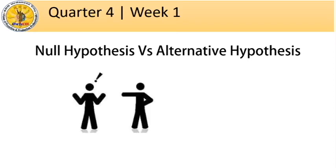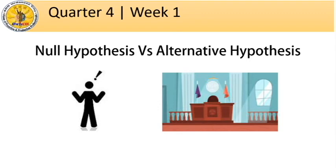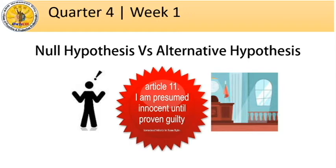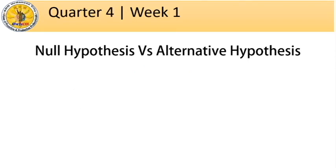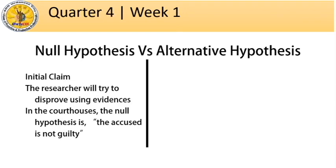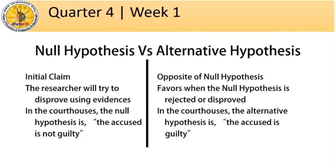Imagine a person who is accused of plagiarism was sent to court. Is the person innocent or guilty of the crime when he enters the court? The answer is: he is innocent until proven guilty. The court will assume first that the person is innocent until there is sufficient evidence that proves he is guilty. The initial claim — that the person is not guilty or innocent — is called the null hypothesis. This is what the accuser will try to disprove. If there is sufficient evidence that the null hypothesis is disproved, the judge can reject it and favor the opposite: the alternative hypothesis, which is that the person is guilty.